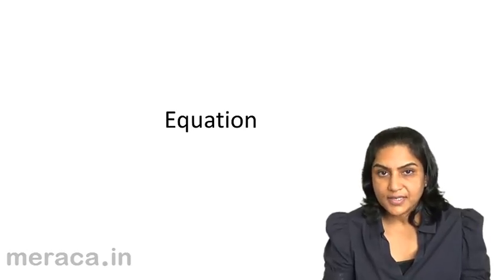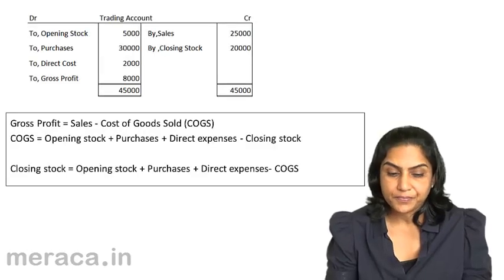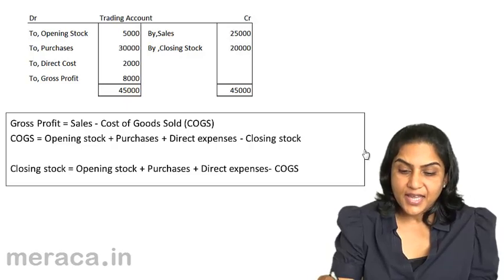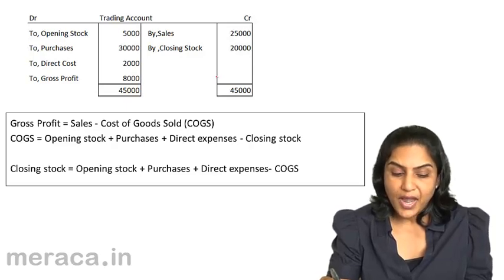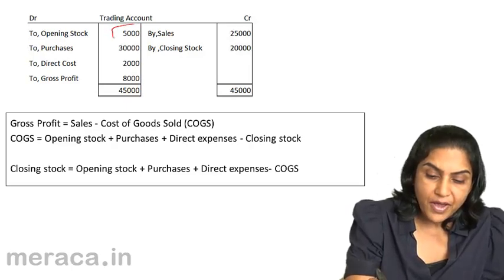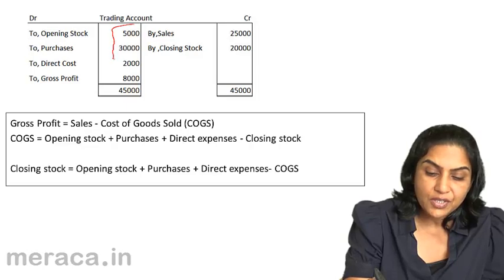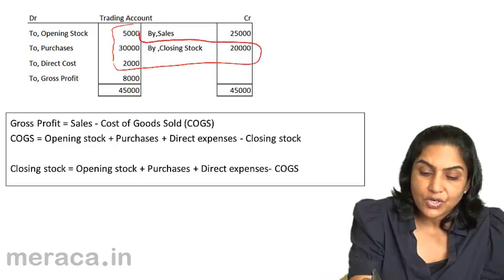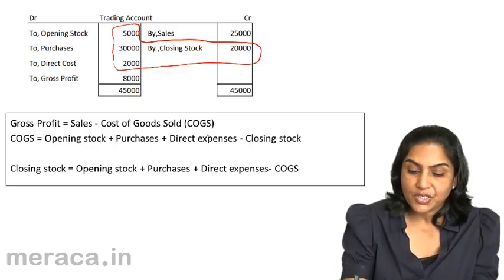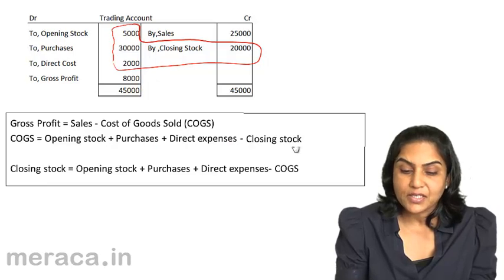Let us understand the T-format of a trading account in the form of an equation. Gross profit is sales minus the cost of goods sold. The cost of goods sold is: opening stock of 5,000, plus purchases of 30,000, plus direct costs of 2,000, less the closing stock. So, cost of goods sold equals opening stock plus purchases plus direct expenses minus closing stock.